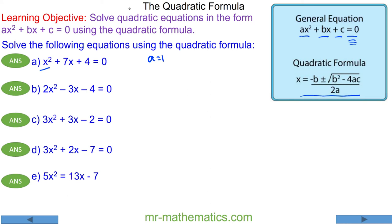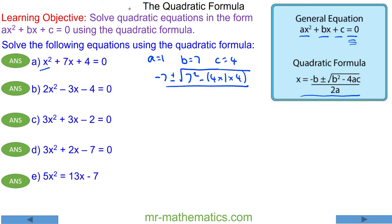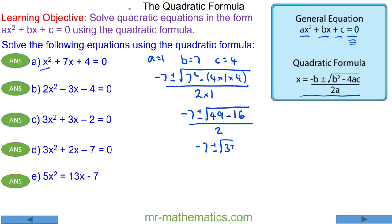For question a, a is equal to 1, b is equal to 7, and c is equal to 4. Putting these values into the formula we have: minus 7 plus or minus the square root of 7 squared minus 4 times 1 times 4, all over 2 times a. Using the order of operations, that gives us minus 7 plus or minus the square root of 33, over 2, which equals x.